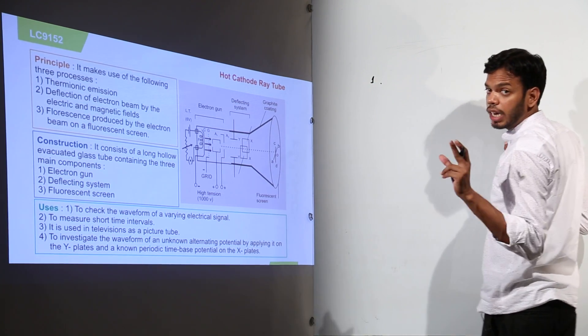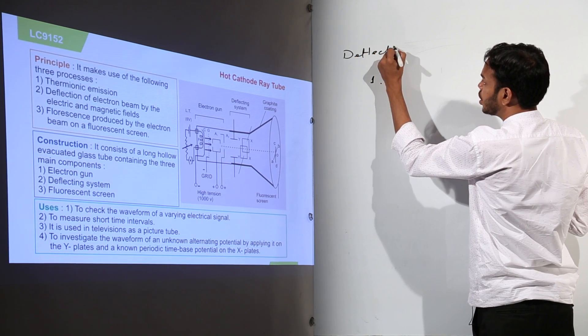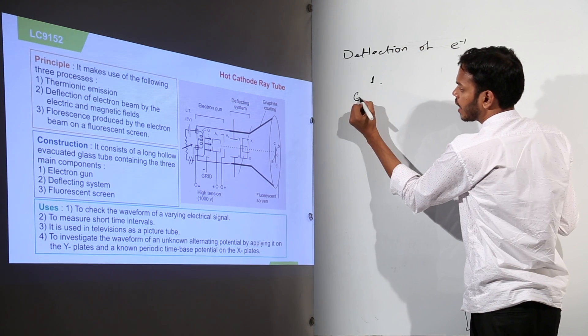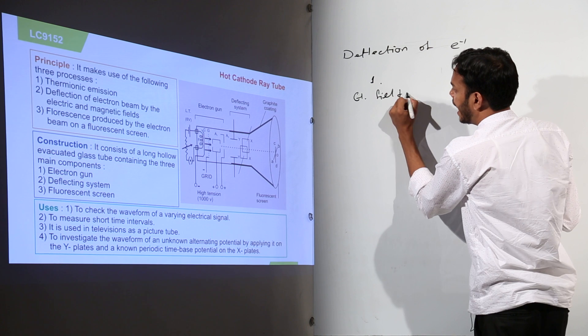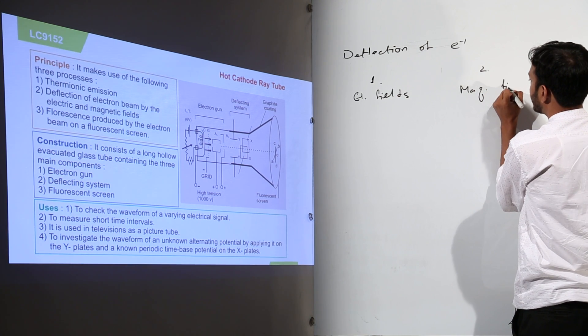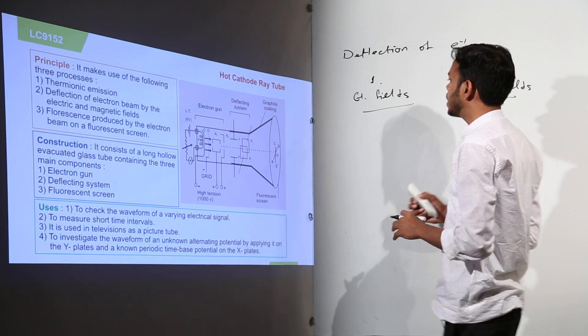Number one, deflection. We are talking about deflection of electrons. Let me write it first of all. Deflection of what? Electrons from electric fields and here I will explain deflection from magnetic fields. After once we are done with this, then we will proceed to the CRT.